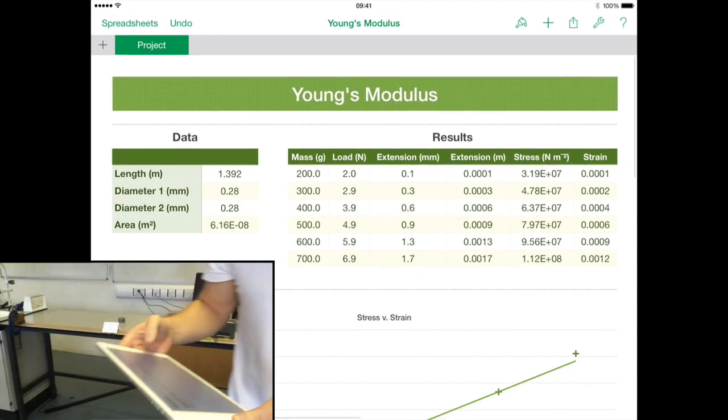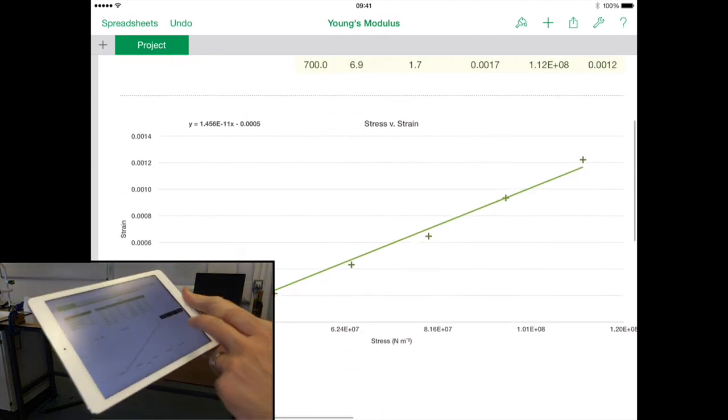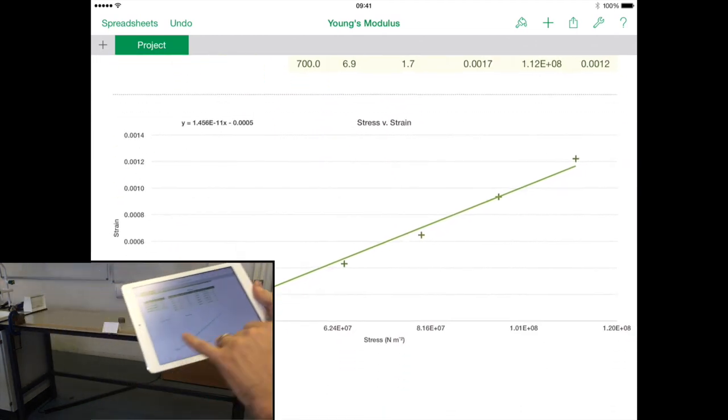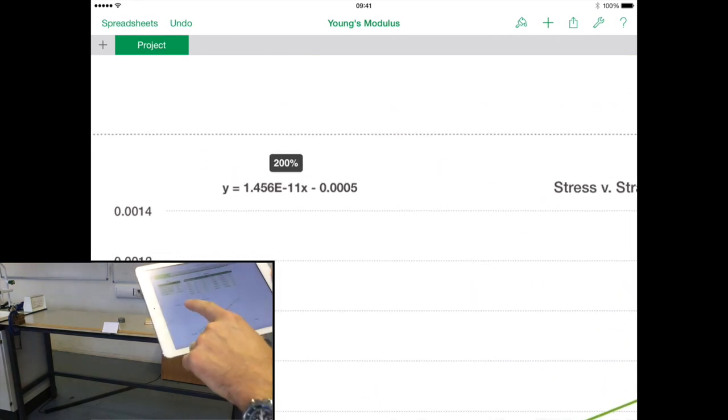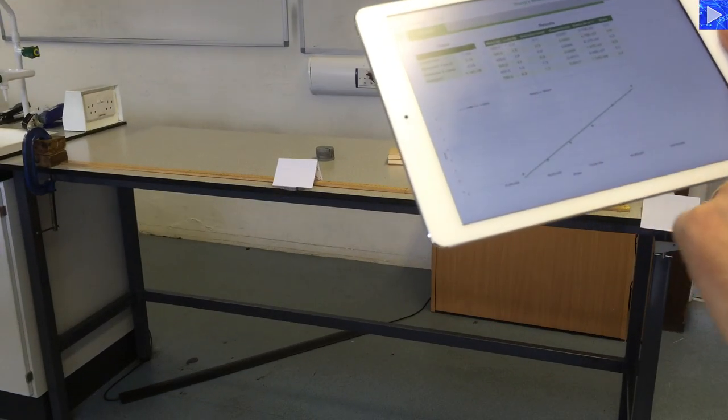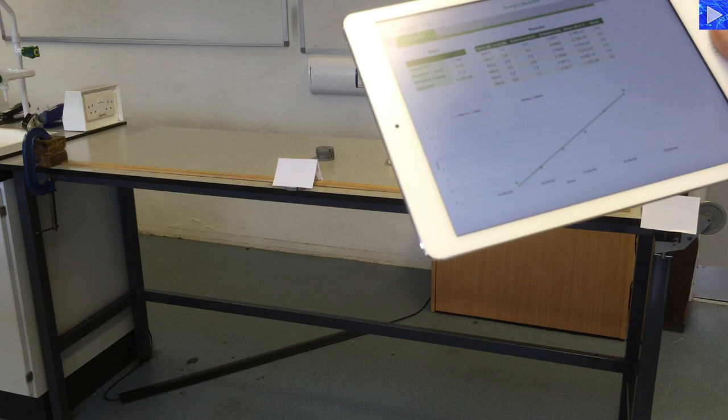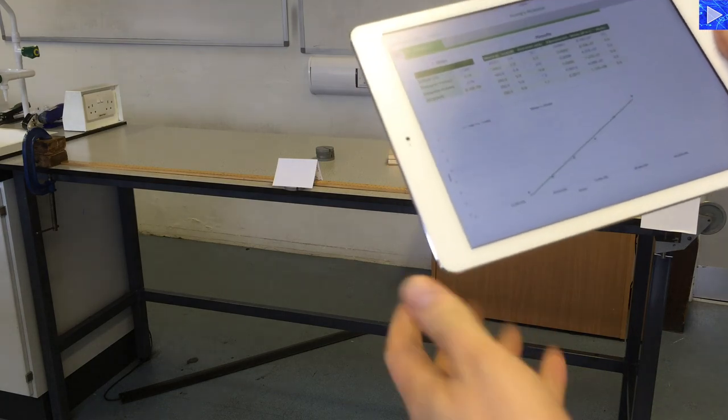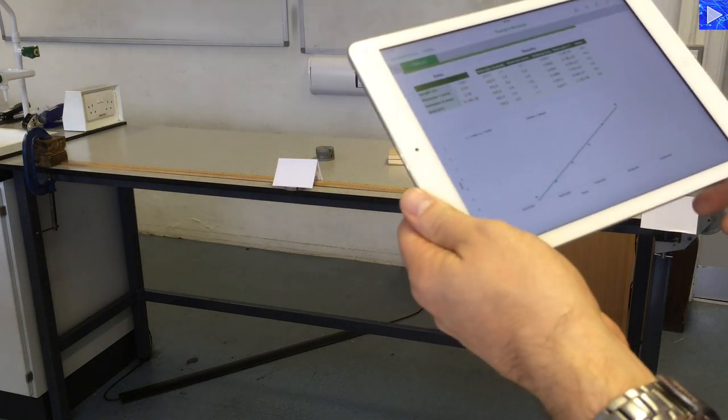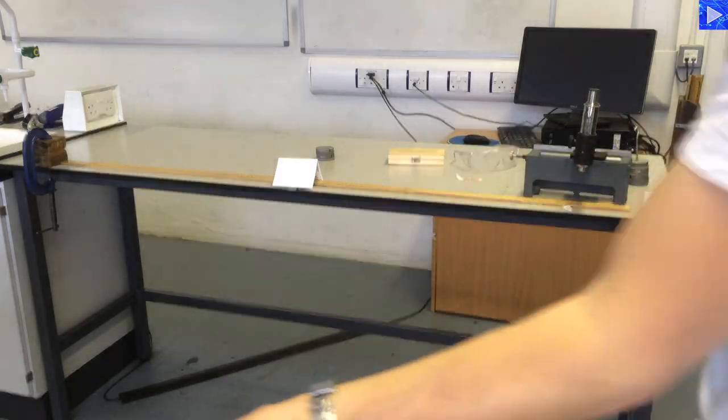From that, I plotted a graph and then I can, from the gradient, work out the Young's Modulus. There's a stress versus strain graph there. That's how the experiment is conducted.